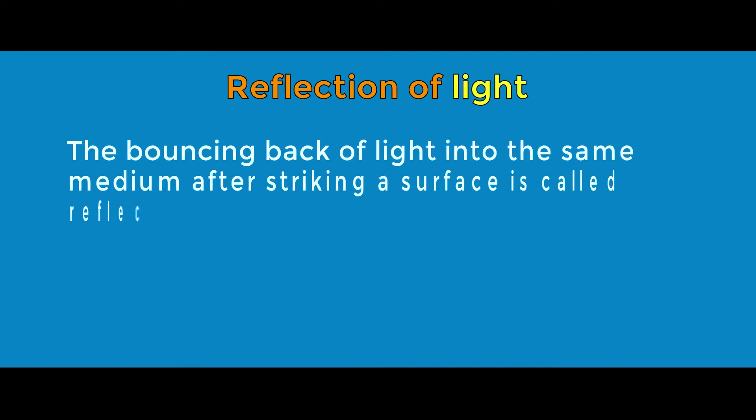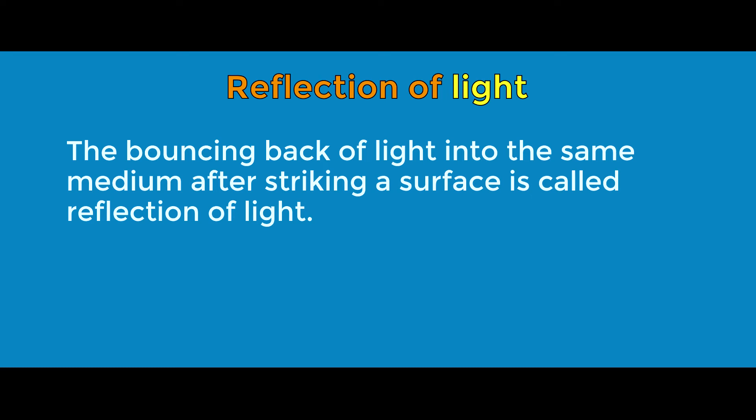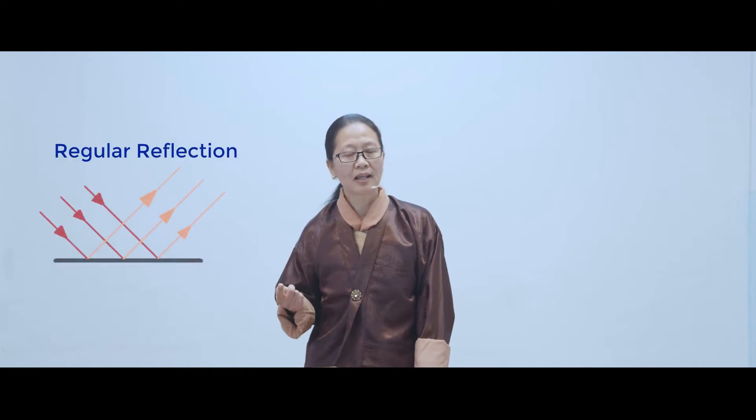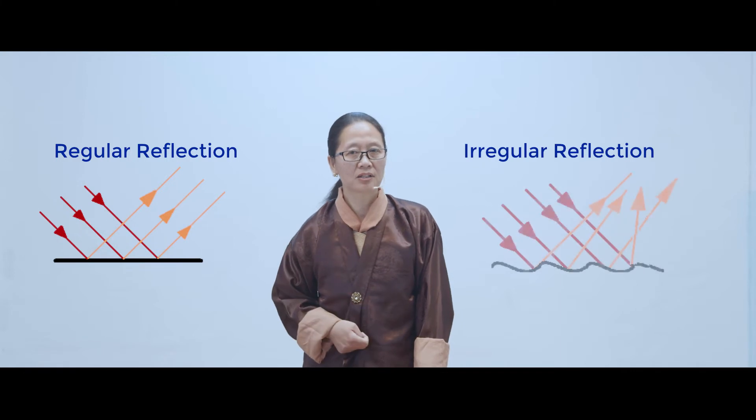Let's look at the definition of reflection of light. The bouncing back of light into the same medium is called reflection of light. It depends upon the nature of surface. So we have two types of reflection of light: regular reflection and irregular reflection.